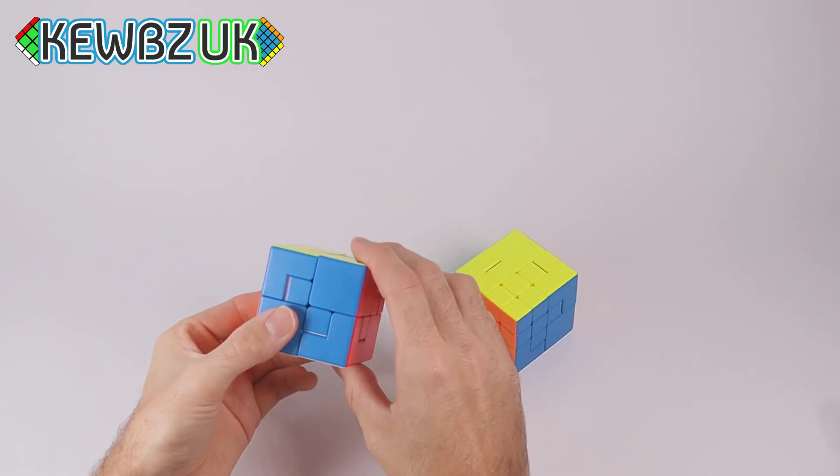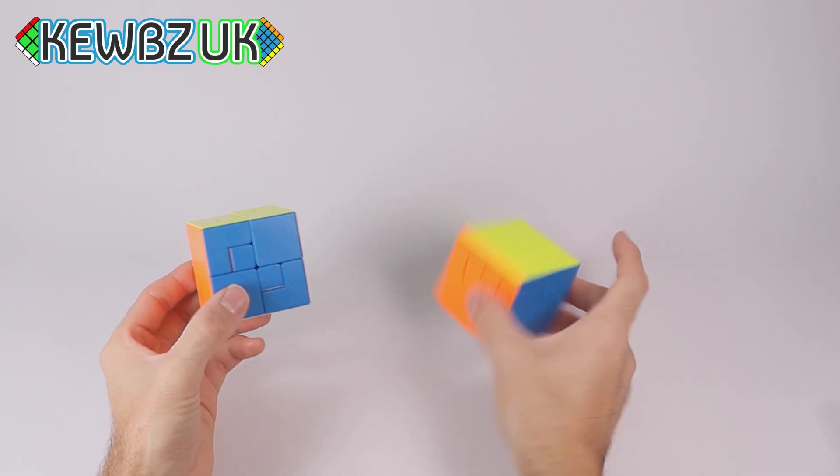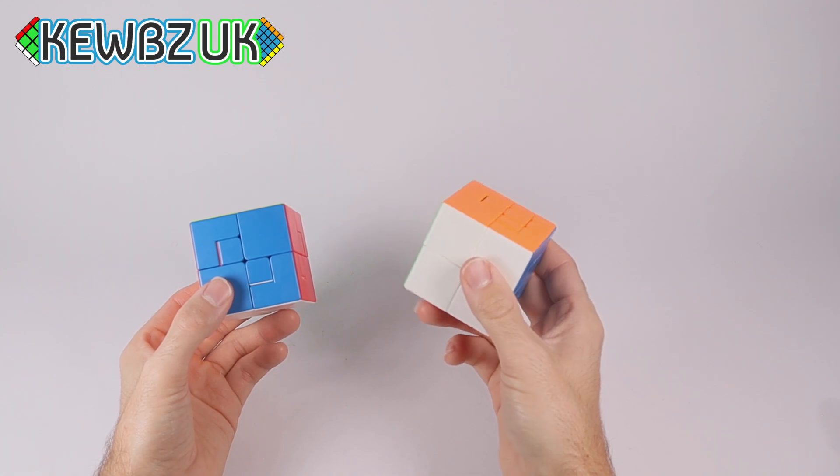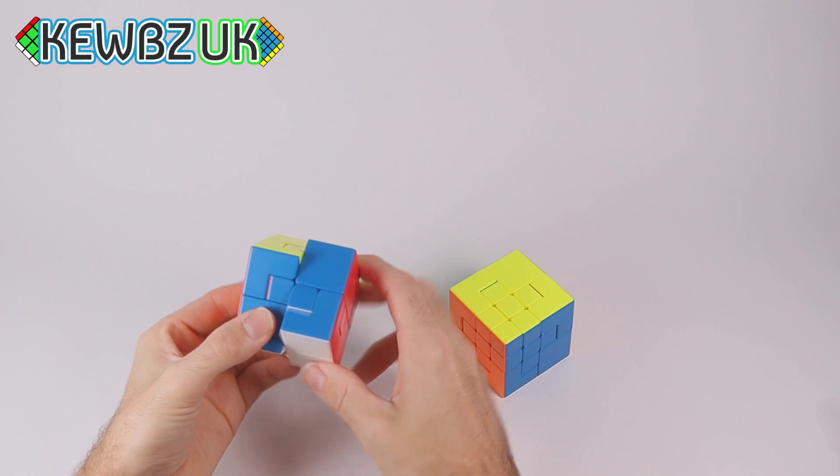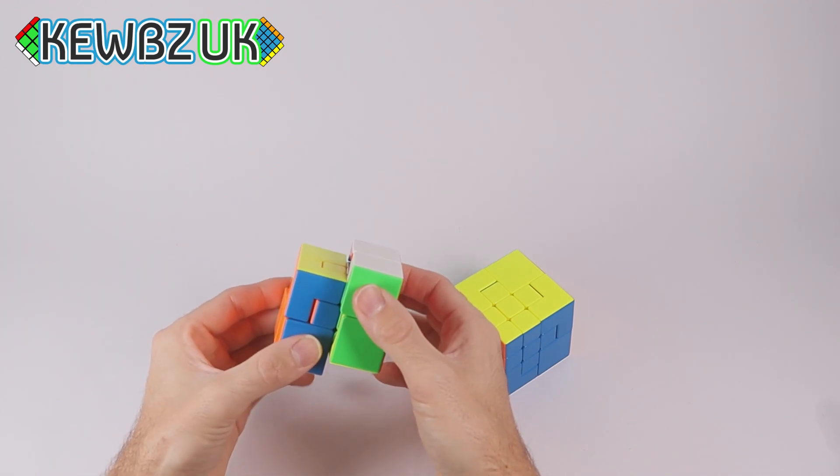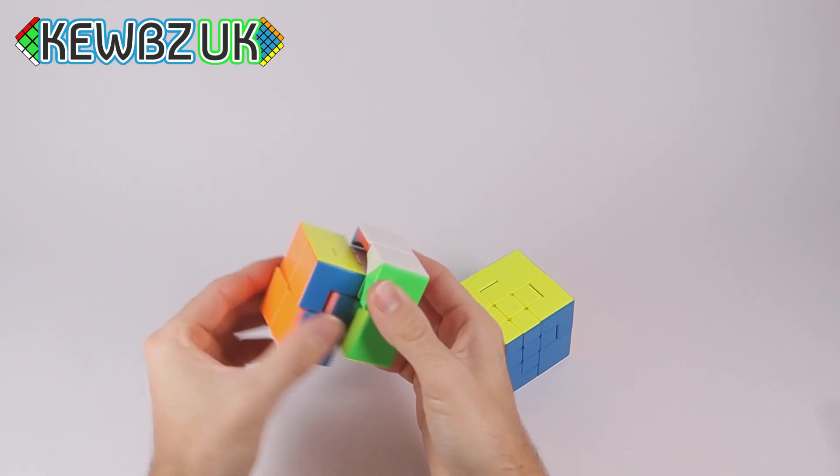So, in regards to scrambling, we are going to scramble both of them. This isn't a solution video. I'm not too sure how to solve it off the top of my head just yet, but I will give it a go at some point. Now, you can see here, if we do just a standard R2, we get this bandaged effect where we can't go any more.